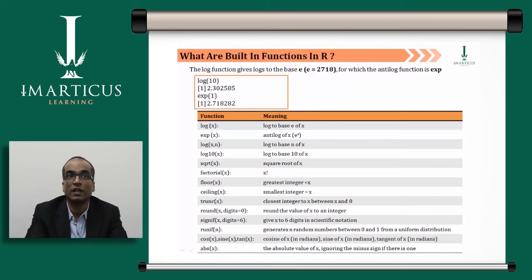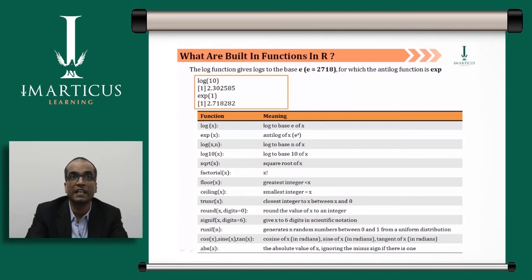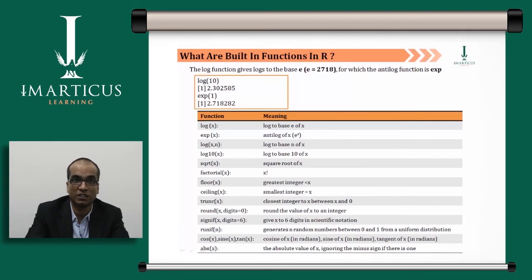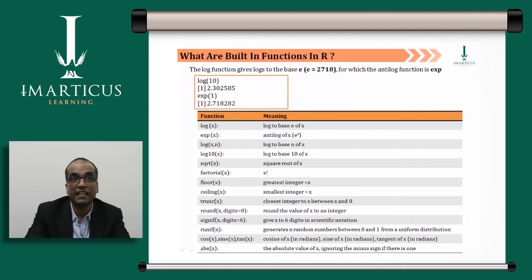ceiling(x) rounds up — ceiling(2.4) returns 3. trunc(x) truncates to the closest integer toward zero. round(x, digits=0) rounds to the specified number of decimal places — for example, round(x, digits=2) returns values like 2.42, and digits=3 gives 2.432. signif(x, digits=6) gives x to 6 significant digits in scientific notation.